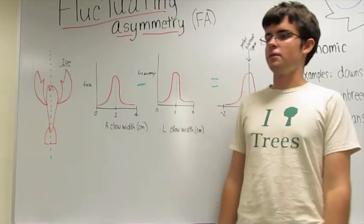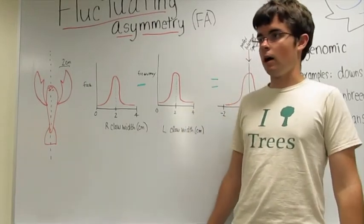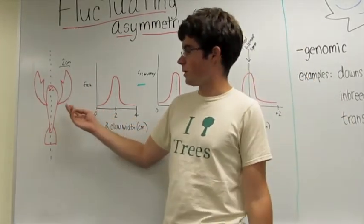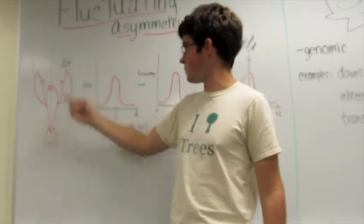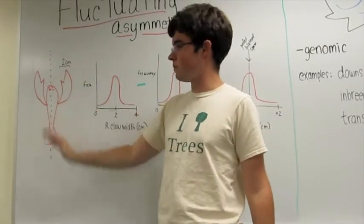To understand fluctuating asymmetry, first we need to understand what symmetry is in relation to an organism. With this lobster right here, we're going to call him Larry. He's perfectly symmetrical. If you divide him down the middle and make a mirror image of him, he'd be symmetrical.